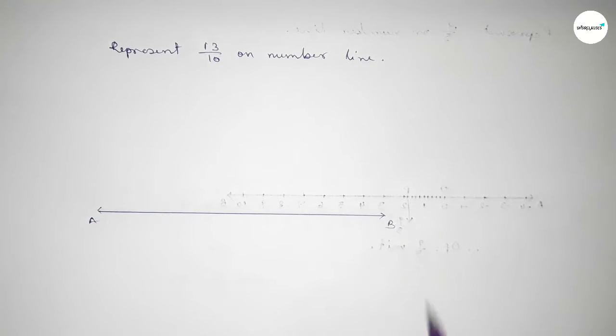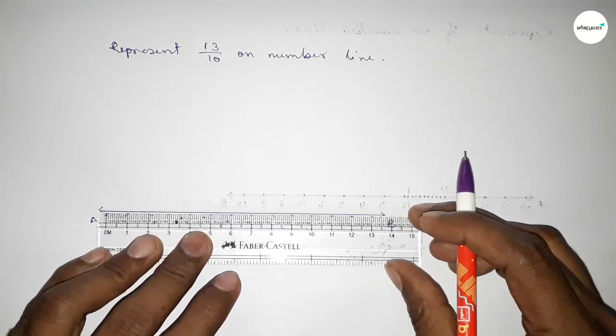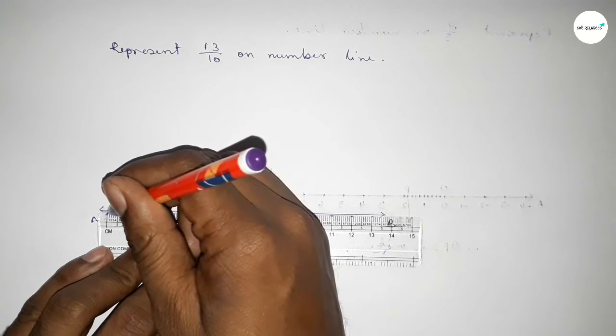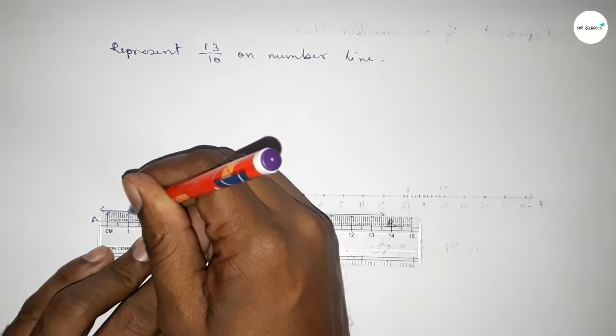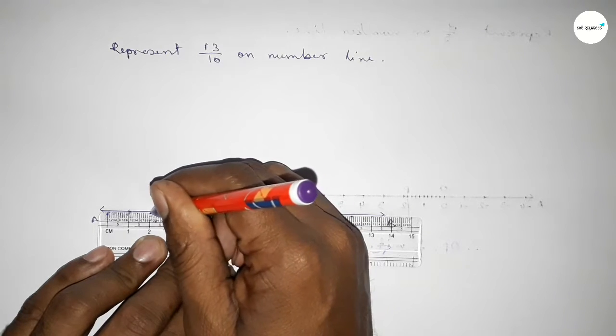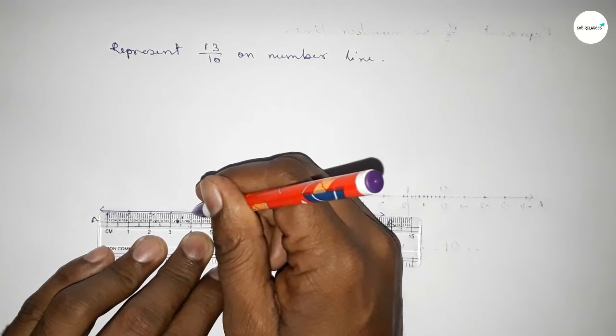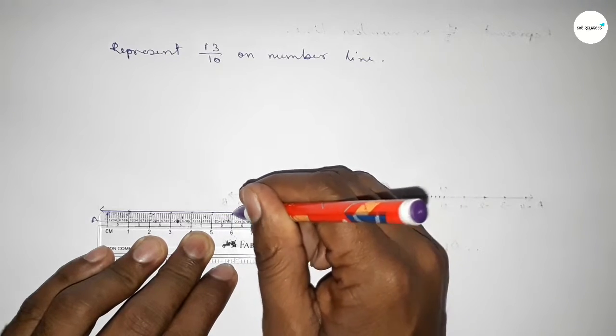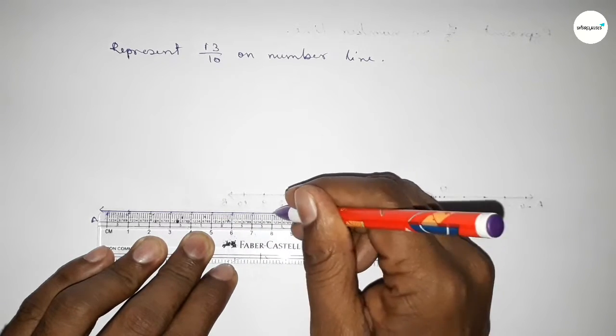Drawing a line and taking arrow marks on both sides, this is the AB line. Next we have to mark the numbers on the line by using a scale.